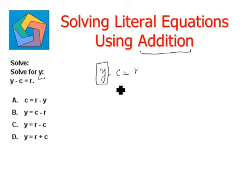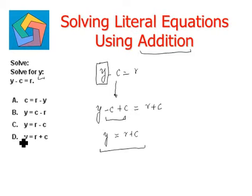What we need to do is eliminate this negative c. This negative c can be eliminated by adding c to the left-hand side of the equation, and it will disappear. So, y minus c plus c equals r. On the right-hand side, we also need to do the similar operation to maintain the balance. Negative c plus c becomes 0, so y equals r plus c is the answer, which is option D.